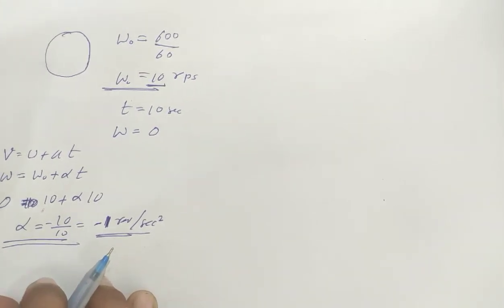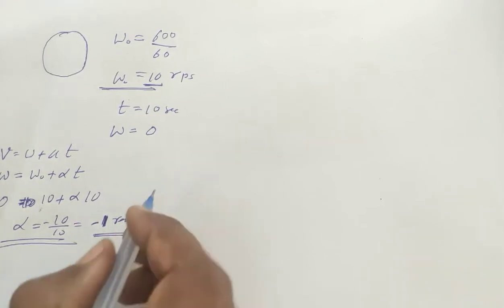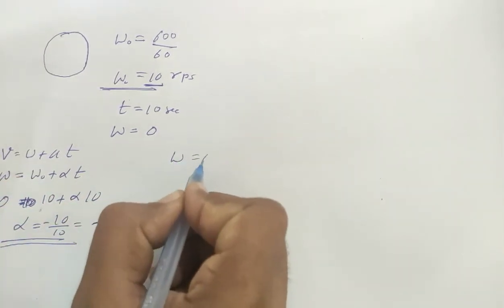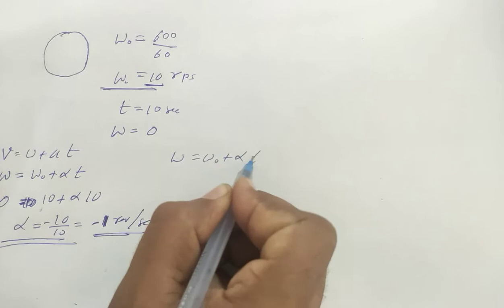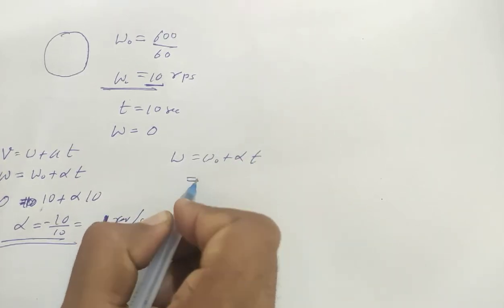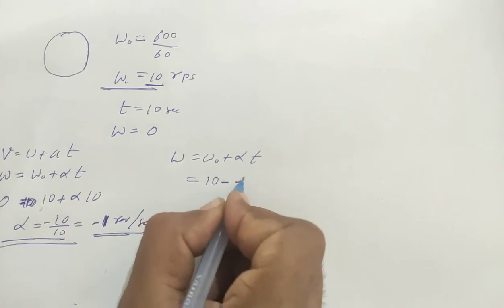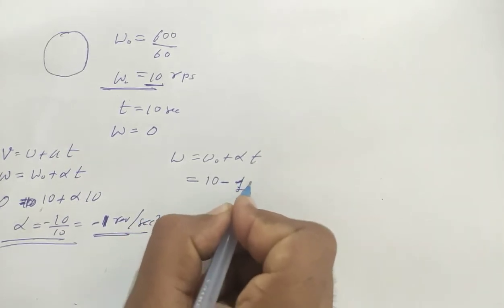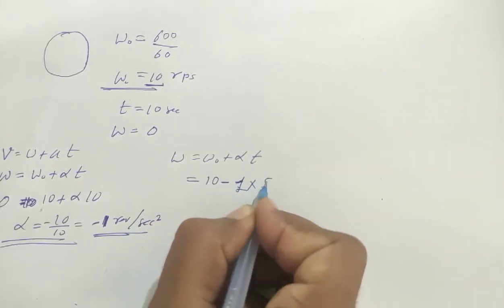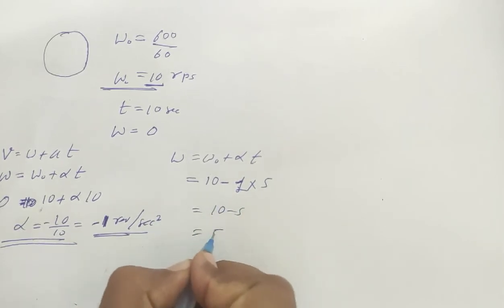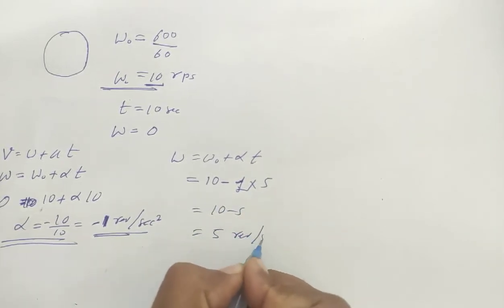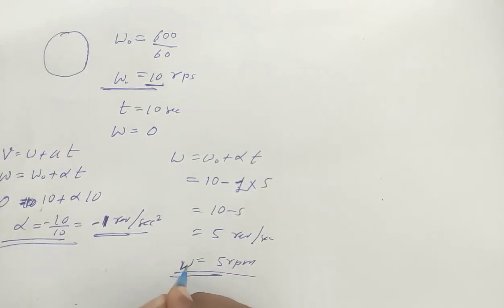5 seconds after, what is the angular velocity? Using the same formula: omega equals omega naught plus alpha times t. After 5 seconds, omega naught is 10, alpha is minus 1, time is 5 seconds. So omega equals 10 minus 5, which equals 5 revolutions per second or 5 rpm. The speed is 5 rpm after 5 seconds.